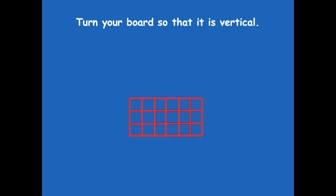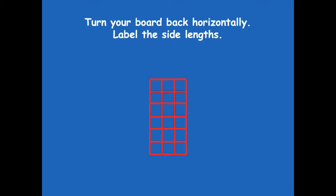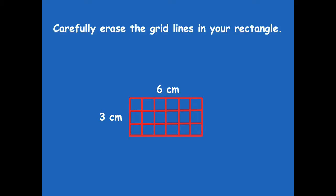Turn your board so it's vertical — right now your board is side to side, so turn it the opposite way so it's up and down. You'll notice that your rectangle changes and goes up and down now. Does the rectangle still have the same area? It sure does — it didn't change at all; we just turned it. Now turn your board back horizontally and label the side lengths. We're going to label those units of measure on your rectangle: 3 centimeters on one side and 6 centimeters on the top. Now carefully erase the grid lines inside your rectangle — take away just those squares on the inside — and you should be left with the outside rectangle.